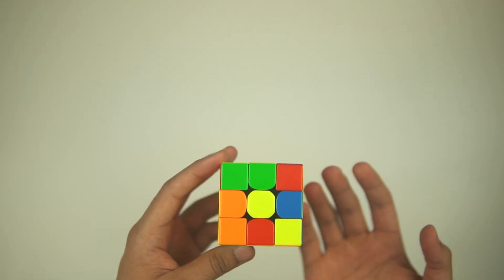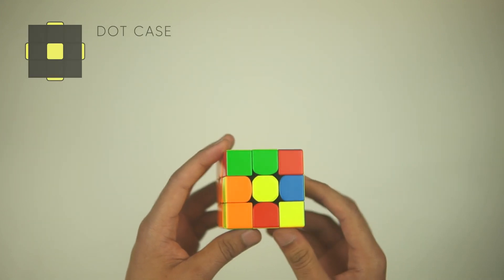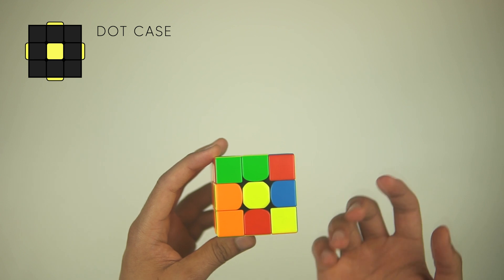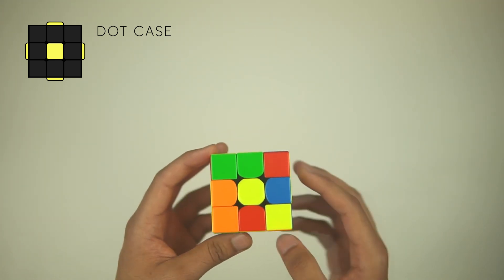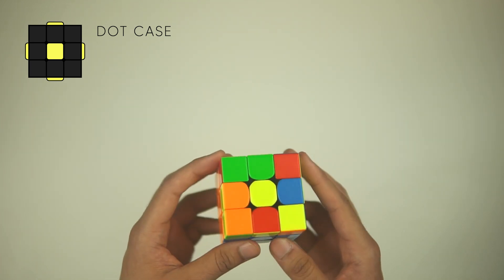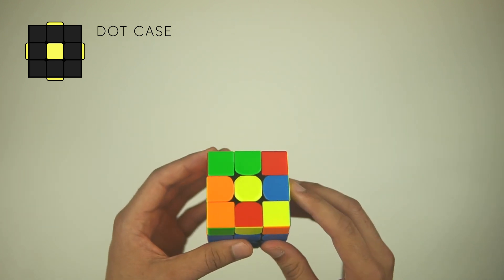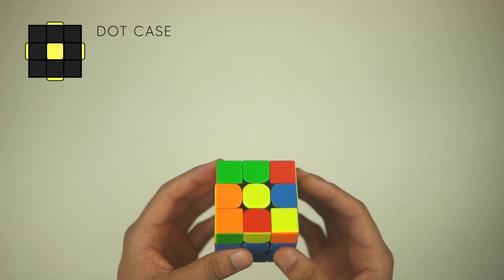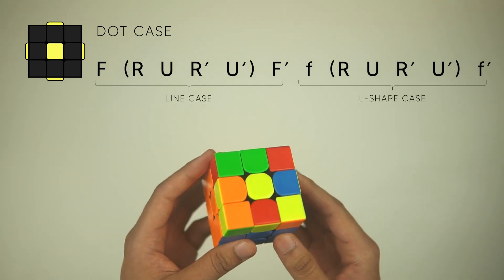The third case you can encounter is just a single dot—you have no edges solved at all. And again, remember to ignore any of the corner pieces, so you could have one, two, or four corners solved, just ignore those, we're only looking at the edge pieces. In this case, it doesn't matter what orientation you hold it from, you could hold it like this or like that, it doesn't matter. The algorithm we're going to perform is just the line case, followed by the L-case algorithm.